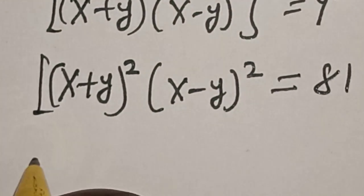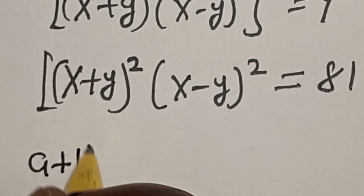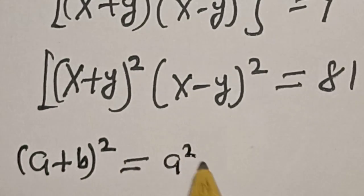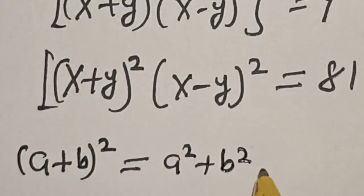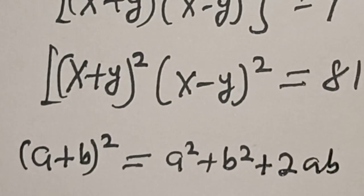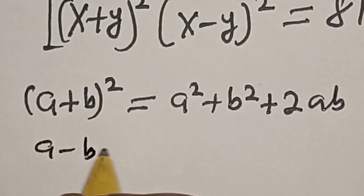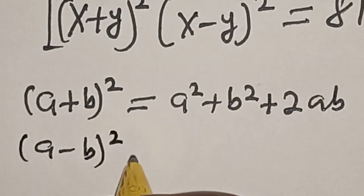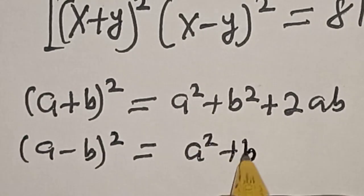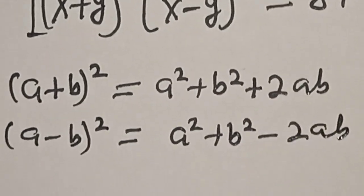Now remember this rule: if you have a plus b squared, this is equal to a squared plus b squared plus 2ab. And if you have a minus b squared, this is equal to a squared plus b squared minus 2ab. Now let's substitute.